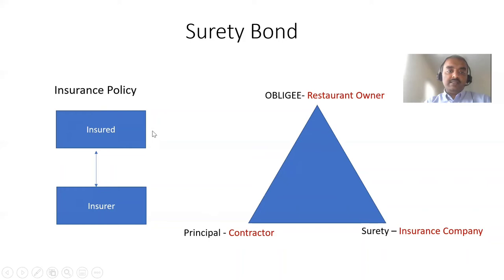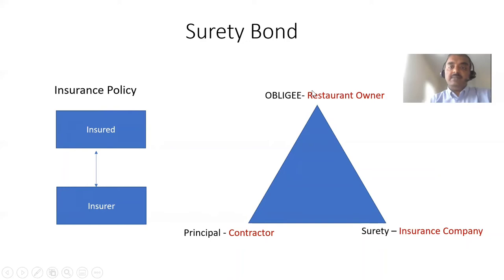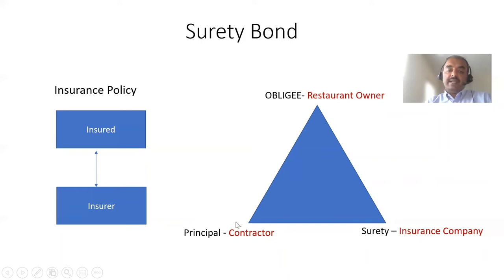The core takeaway is: in regular insurance, there are two entities involved in the contract, whereas in a surety bond there are three roles — the obligee, who is the person who wants to build something or run their own business; the principal, who helps the obligee by building a building or doing a support role; and the surety, who guarantees to the obligee that if the principal does not complete their work as promised, they will pay the required claim amount.